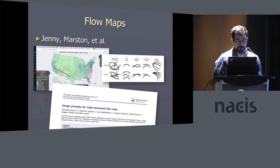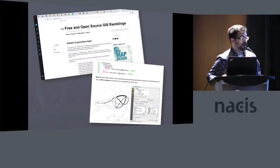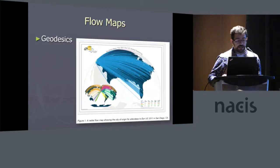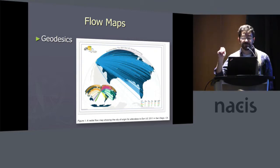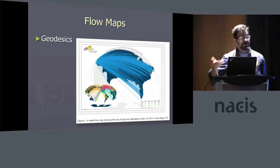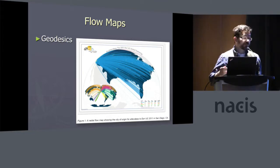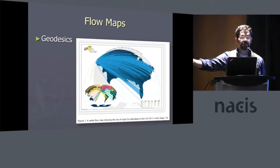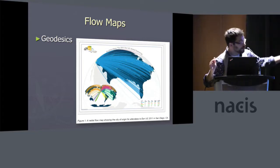A lot of people do relatively straightforward applications using geodesics — taking advantage of the fact that a straight line on Earth's surface, once applied to a map projection, is almost always going to be curved. One way to produce curved lines automatically is to calculate the great circle arc between two places on Earth, then project the map and get something curved.